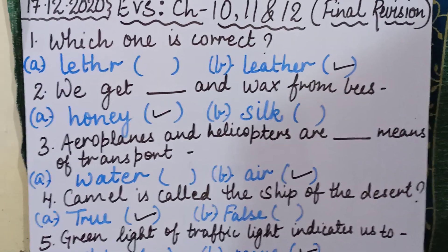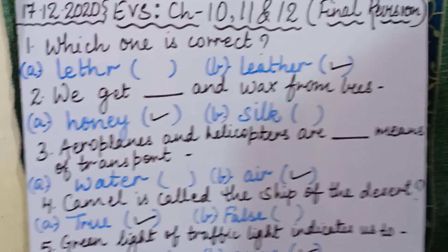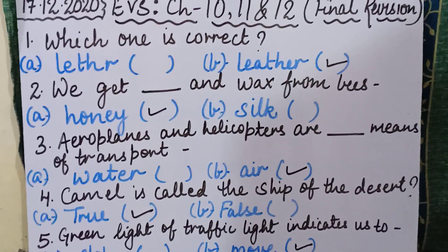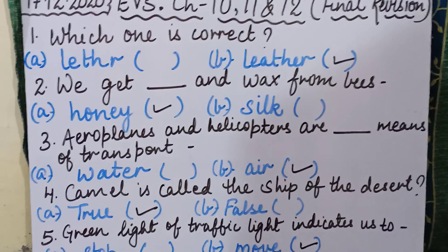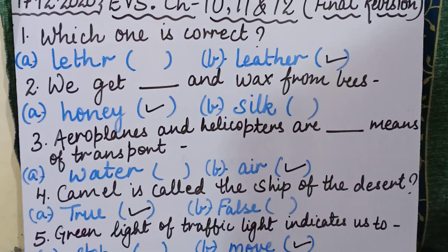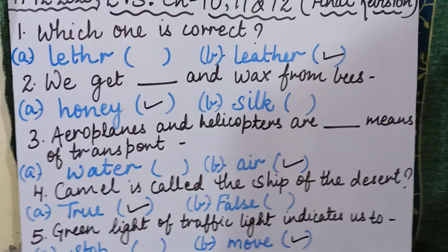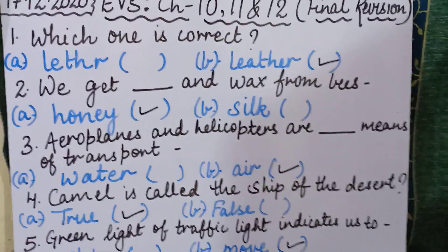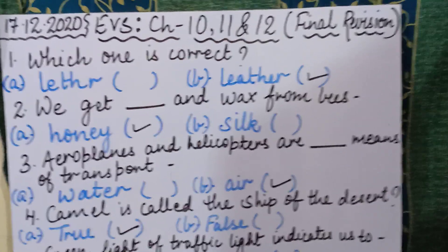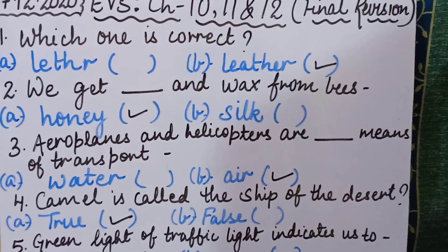In this final revision I will be giving you some questions — 10 to 12 questions — containing all 3 chapters combined: chapters 10, 11, and 12. I will mix up all the questions and give them to you in the form of MCQs. Make sure that you complete all this work in your revision notebook.